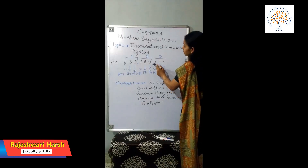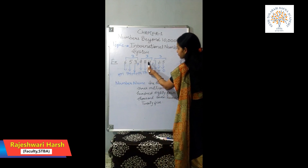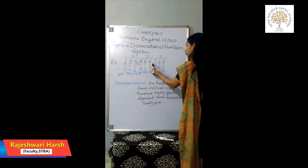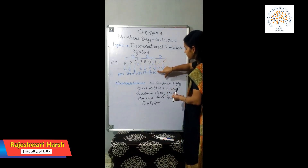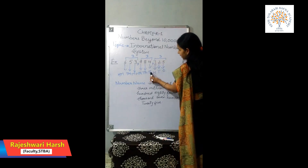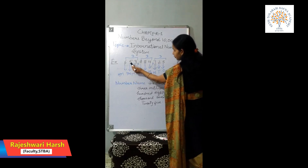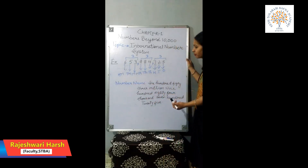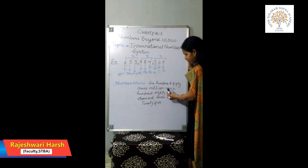Let's take another example of the International Number System: 653,984,725. We group three digits at a time and put commas before every three digits. Here 5 is in the ones place, 2 is in the tens place, 7 is in the hundreds place, 4 is in the thousands place, 8 is in the ten thousands place, 9 is in the hundred thousands place, 3 is in the millions place, 5 is in the ten millions place, and 6 is in the hundred millions place. So the number name is 653,984,725.